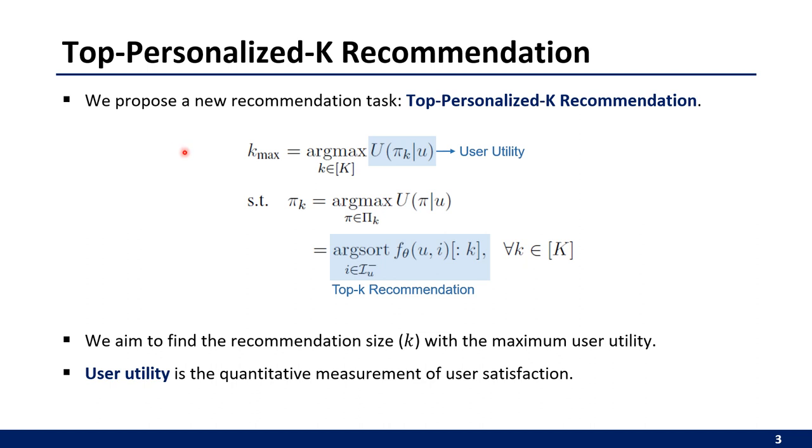We first formulate a bi-level optimization problem where the objective is to determine the recommendation size Kmax that maximizes the user's utility. User utility is the quantitative measurement of user satisfaction.